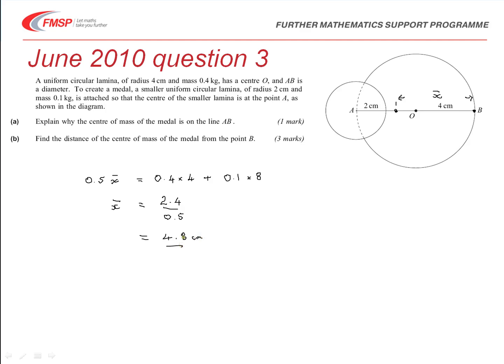Three marks for that part of the question, using the appropriate method by taking the moments from B. It gives you one mark, an accuracy mark for having the correct information in that statement, with at least two terms correct, and then a final accuracy mark for the 4.8.